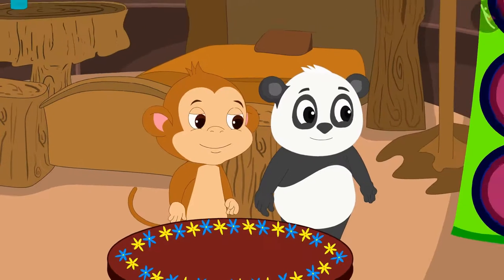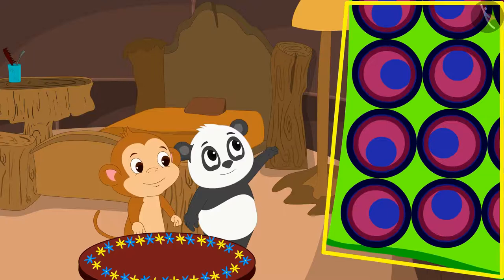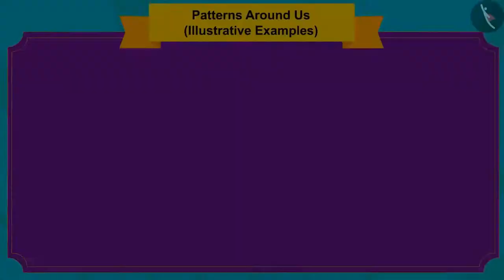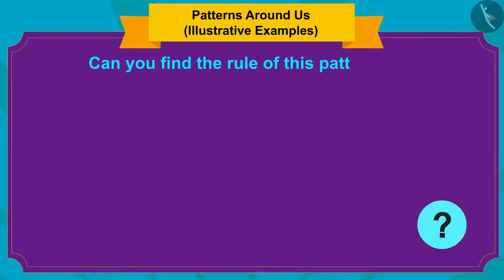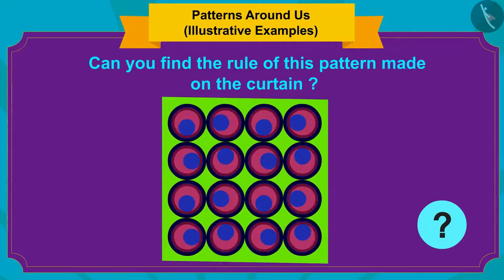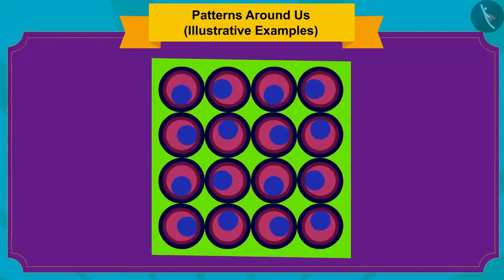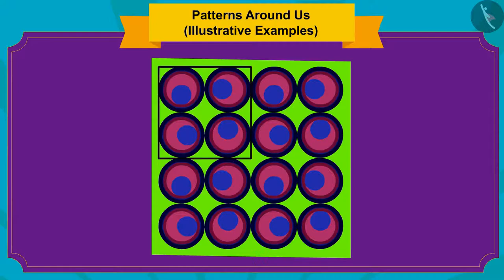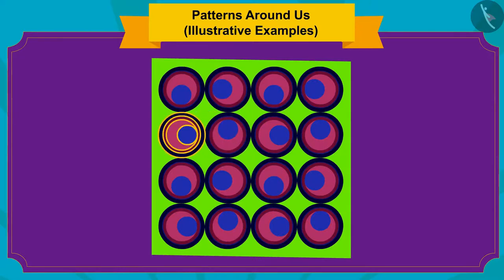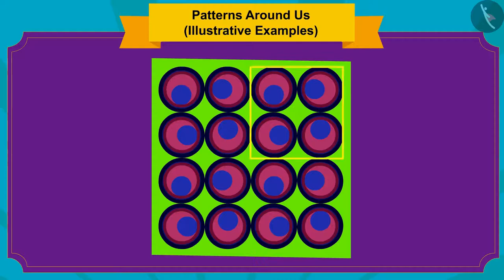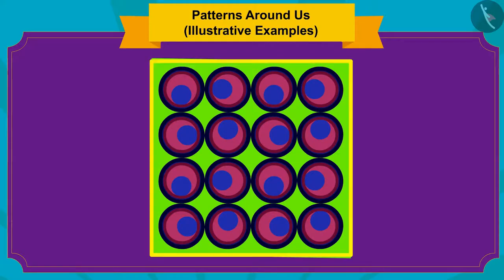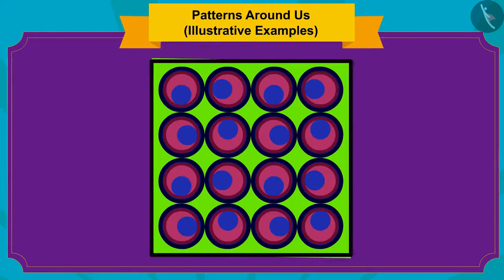Golu and Babban also saw a unique pattern on the curtain of Golu's house. Can you find the rule of this pattern made on the curtain? If you want, you can stop the video and find the answer. Well done, kids! Your answer is absolutely correct! Here, a group has been formed by rotating one shape in different ways, and then by repeating this group of shapes again and again, a unique, beautiful pattern has been made.